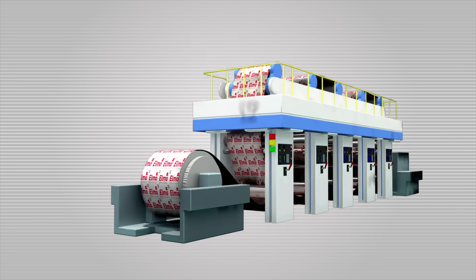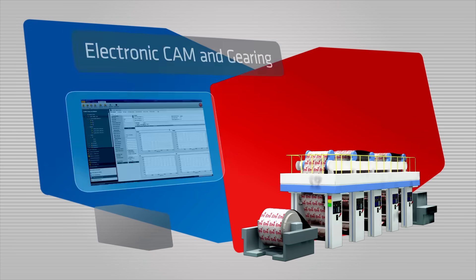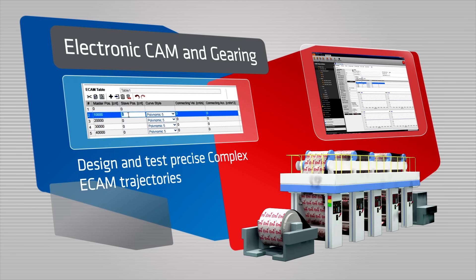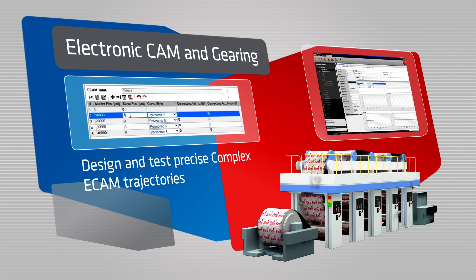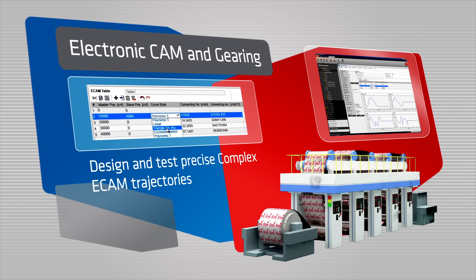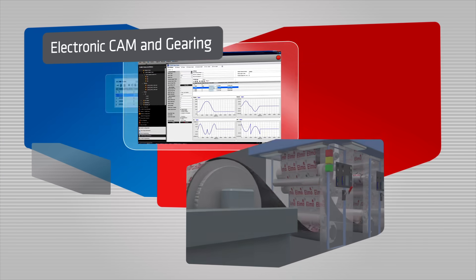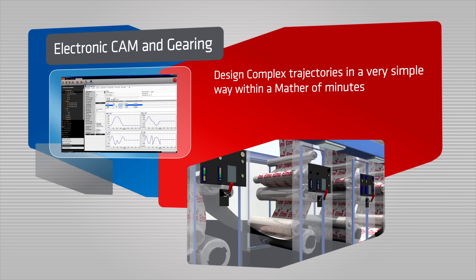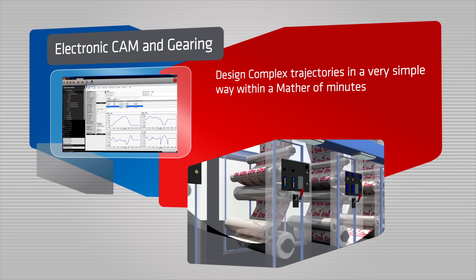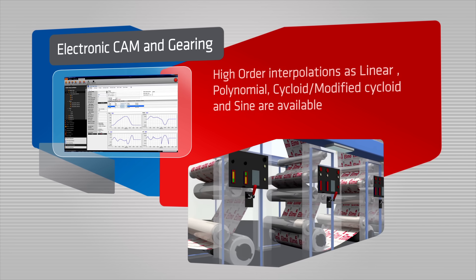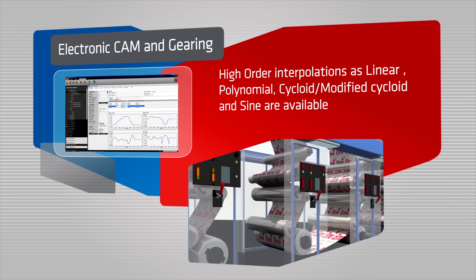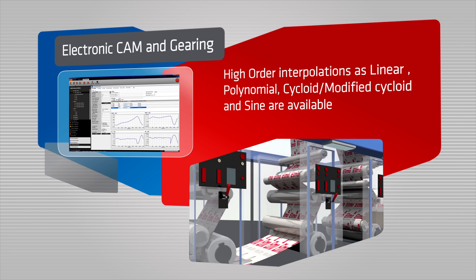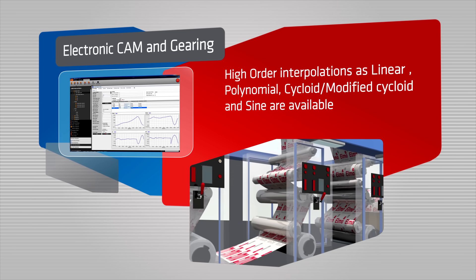The electronic cam and gearing tool is a new advanced application tool implemented in EASE-2 for the drive and the maestro, ELMO's motion controller levels. This advanced tool enables simple designing and testing of precise e-cam trajectories by adding several slave positions as a function of the master position and interpolating between positions using one of the advanced interpolation methods.